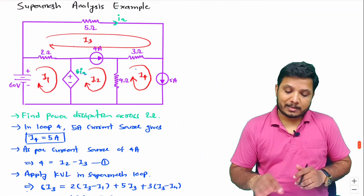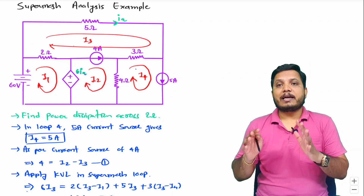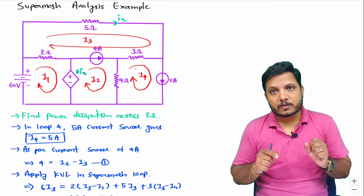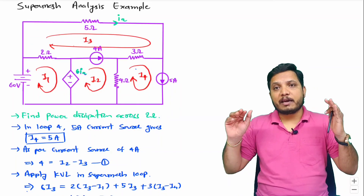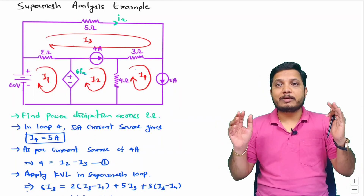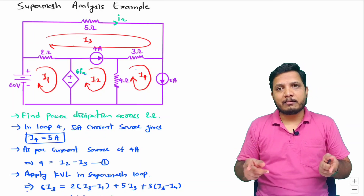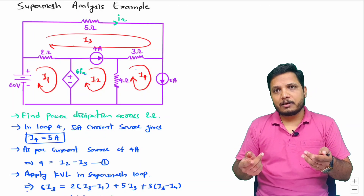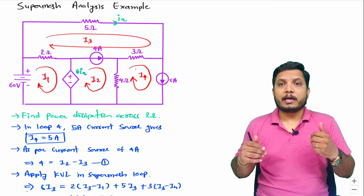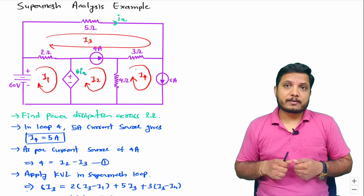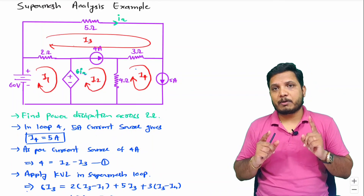That is how we can identify how much power is getting dissipated, and this is super mesh analysis. In super mesh analysis: first identify currents as per the current sources, then consider them as open circuits, then apply KVL to the bigger super mesh loop, and then resolve the equations. It is a bit lengthy process, but that is how you will improve in electronics. I hope you have understood this. Thank you so much for watching this video.